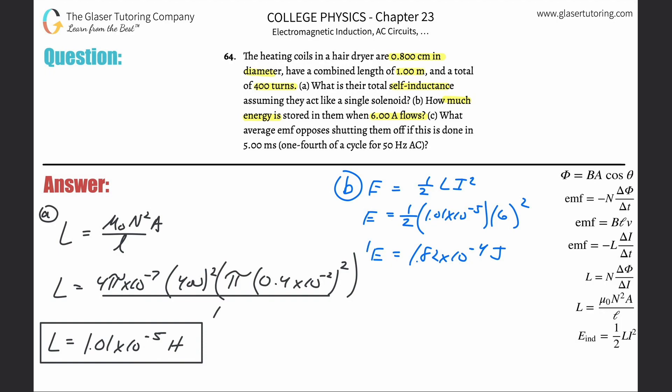It'll be 1.82 times 10 to the minus 4th, and it's energy, so that's joules. Great. Now, how about letter C: What average emf opposes shutting them off if this is done in 5 milliseconds?